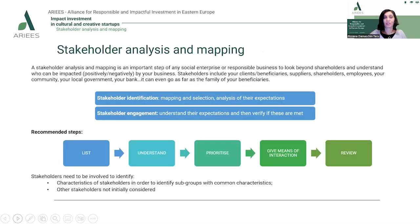Before launching a social enterprise or responsible business, it's crucial to perform a thorough stakeholder analysis and mapping. The idea is to look beyond shareholders and understand who can eventually be impacted by your business, both positively and negatively. Stakeholders can include your clients, beneficiaries, suppliers, partners on the value chain, shareholders, employees, local communities, local government, even your bank, and the families of beneficiaries. It's important to identify the key stakeholders, map them, select the most relevant ones, and analyze their expectations.